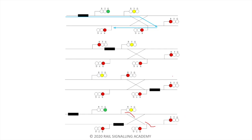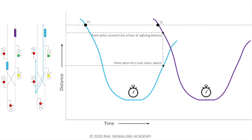Looking at the time-distance graph for the turn-back scenario: the blue train comes in, all routes are set, it stops at the turn-back location. After the changeover it starts proceeding in the other direction. I must wait until the train clears the switch, then the switches realign, and only when realignment is done can the next train arrive at the sighting distance. So if this is the sighting distance, the purple train can arrive at that point when the train clears the crossover. To calculate headway, I pick any point on the guideway and subtract t2 minus t1.